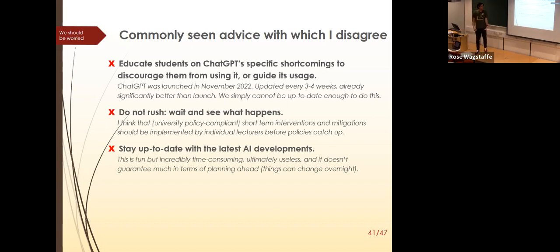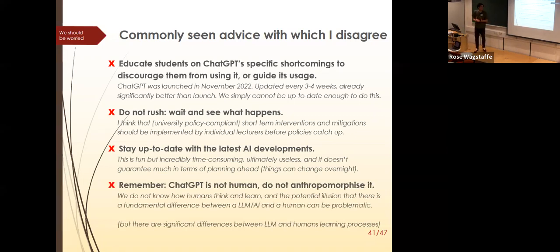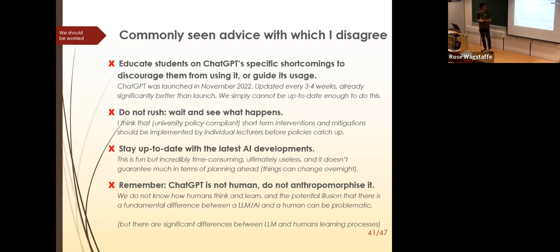It's much better to take a step back, assume ChatGPT is very good, and plan ahead — if it turns out it's worse, that's better for us. Finally, the advice 'ChatGPT is not human, do not treat it as human' — I disagree. We don't know exactly how humans think and learn; the illusion that we are fundamentally different from an LLM could be problematic. I wouldn't assume there are things humans can do that an LLM definitively cannot.